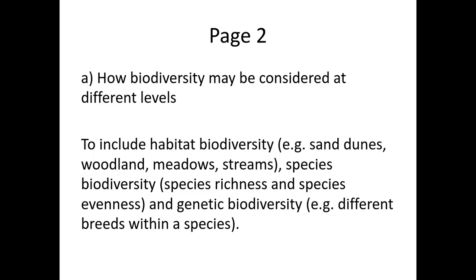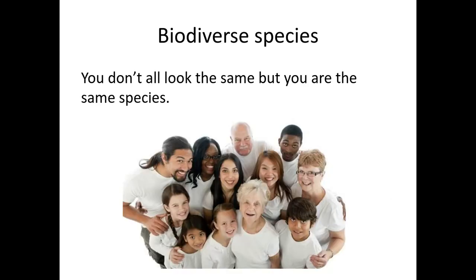There are different aspects to biodiversity and we're going to look at each one. Later on within the specification for biodiversity, we do go over some of these in a bit more detail. The first one is biodiversity within a species — for example, Homo sapiens like ourselves. We have variation within our species, so we are biodiverse within our species.